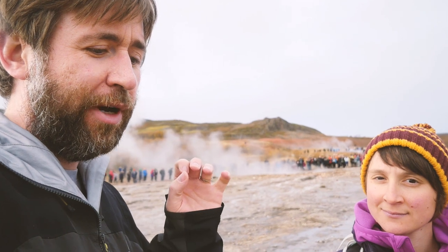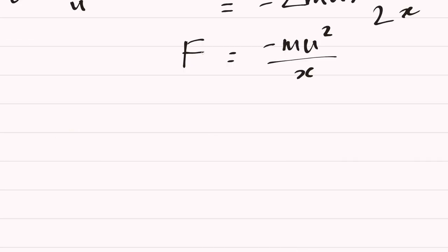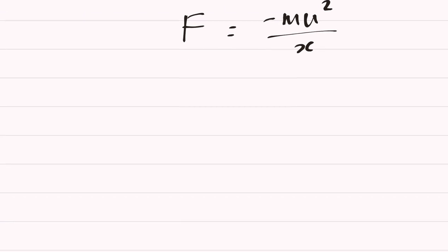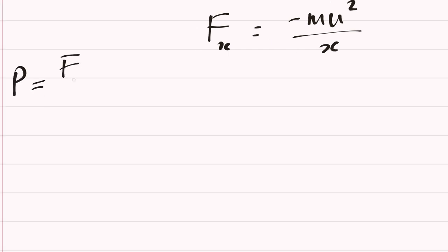Fluid pressure is the same as normal pressure — it's force over area. It's the force of all those little tiny particles, which is what we call statistical physics. The pressure in the x dimension is the force in the x dimension over the area yz, giving pressure Px = mu² over (x times yz).